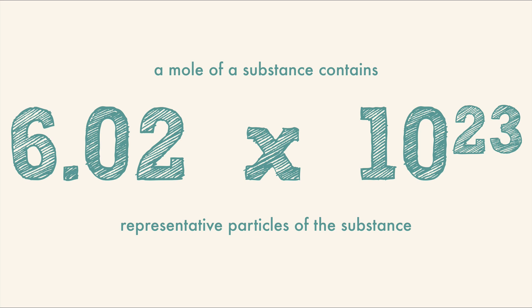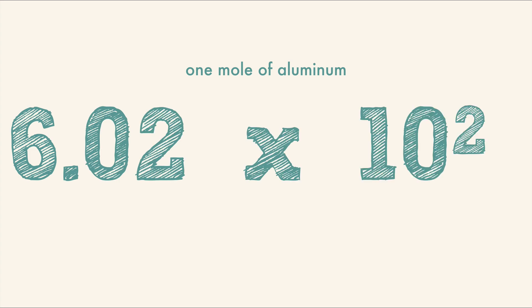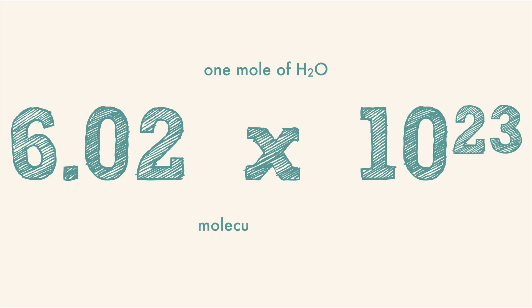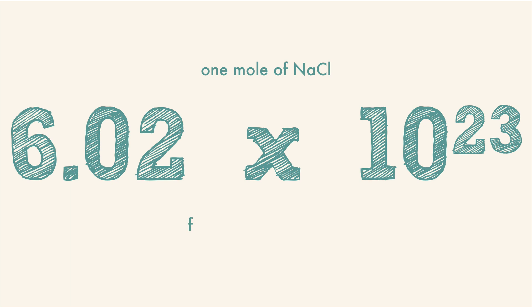Let's use an example. One mole of aluminum would be 6.02 times 10 to the 23rd atoms of aluminum. One mole of water is 6.02 times 10 to the 23rd molecules of water. And one mole of sodium chloride is 6.02 times 10 to the 23rd formula units of sodium chloride. And that's it.